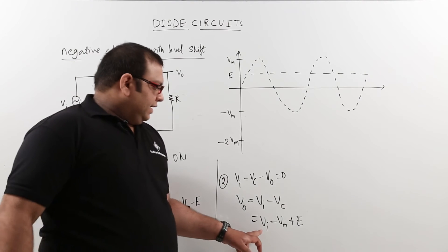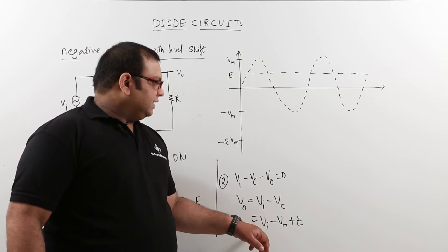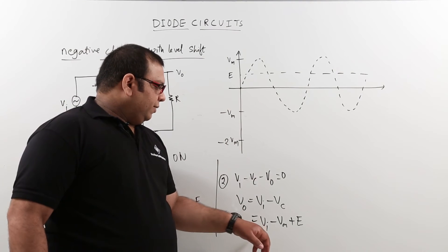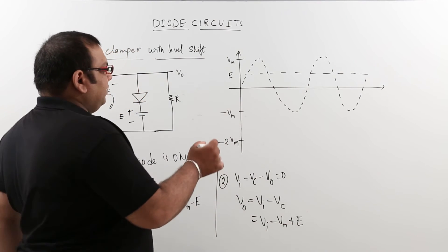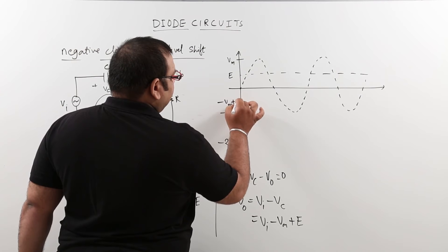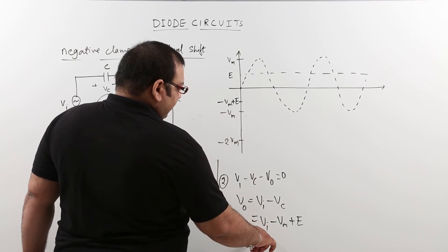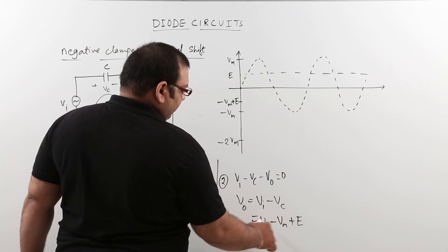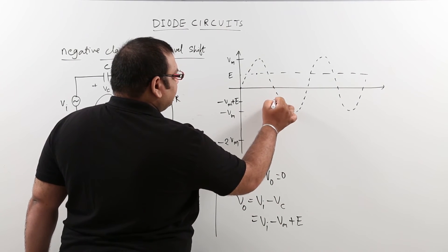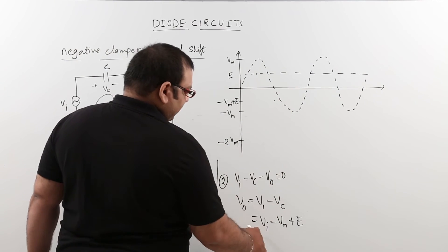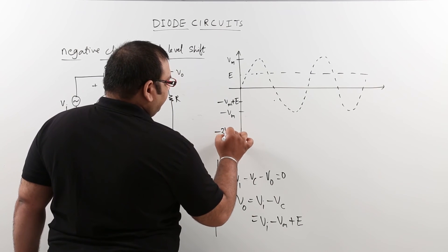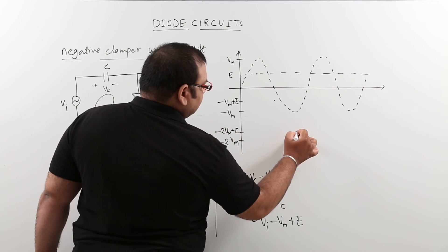From this relation we can draw the output waveform. When input Vi is 0, output equals minus Vm plus E. When Vi equals Vm (peak), output equals E. When Vi equals minus Vm, output equals minus 2Vm plus E — this is the lower level of the waveform.